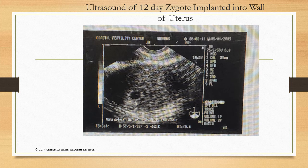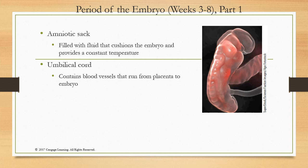Here's a real-life ultrasound of a 12-day zygote implanted into the wall of the uterus. You can see the little circle — that's the placenta forming — and the germ disc, which is the baby. This is done by transvaginal ultrasound, where a wand is placed inside the vaginal wall to see inside the uterus. Right after implantation you can already see the germ disc and the placenta starting to form.